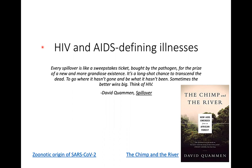You guys probably already know that HIV is a zoonotic disease, so it's a disease that came into humans from animals. I really like this quote from the book Spillover, also in the smaller book The Chimp in the River, which is about the zoonotic origins of HIV and how it emerged from a forest in Africa and became a worldwide pandemic that we may never get rid of. He writes that every spillover is like a sweepstakes ticket, bought by the pathogen for the prize of a new and more grandiose existence — a long shot chance to transcend, to go where it hasn't gone and be what it hasn't been. Sometimes the better wins big. Think of HIV.